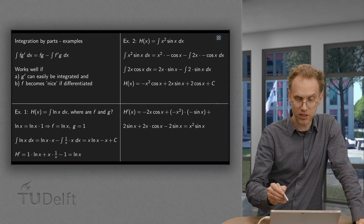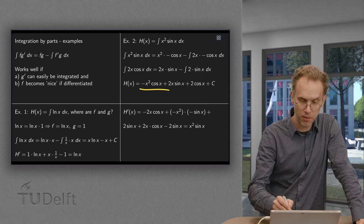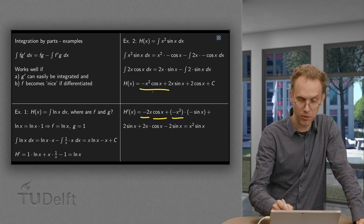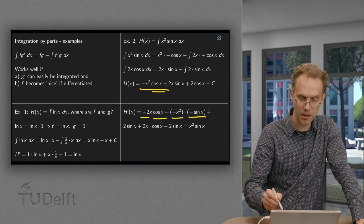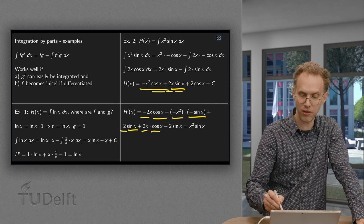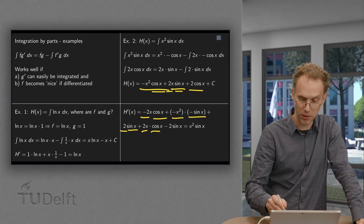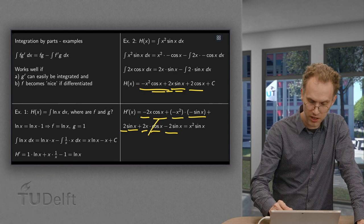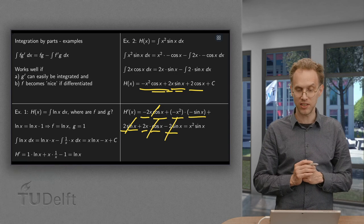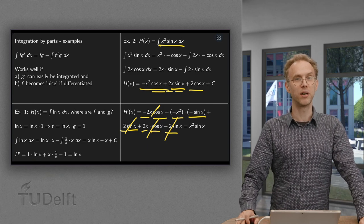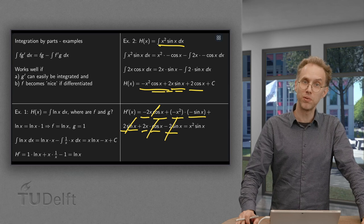Of course, we check by computing the derivative. Differentiating minus x²·cos(x) gives minus 2x·cos(x) plus x²·sin(x). Differentiating 2x·sin(x) gives 2·sin(x) plus 2x·cos(x). And the derivative of 2·cos(x) gives minus 2·sin(x). These terms cancel out, and we get x²·sin(x), which was our original function. So there we have two more examples of how you can use integration by parts to compute an antiderivative.